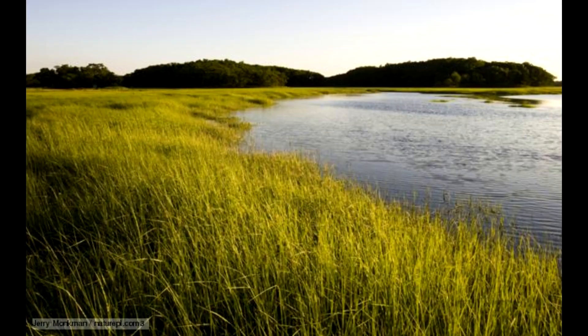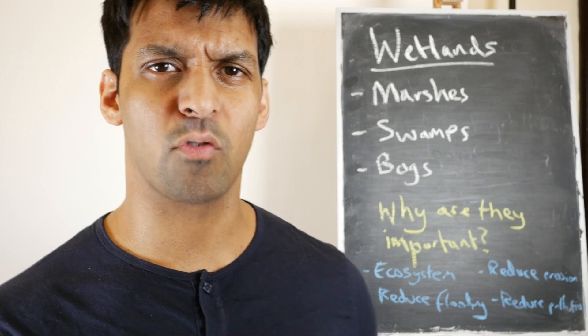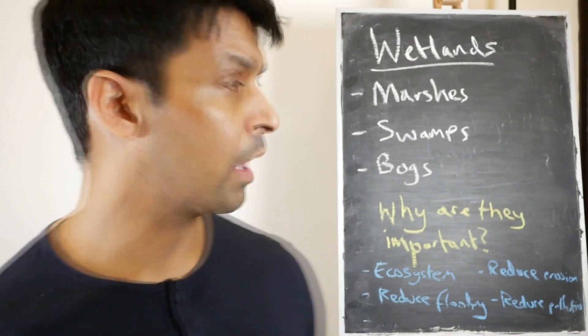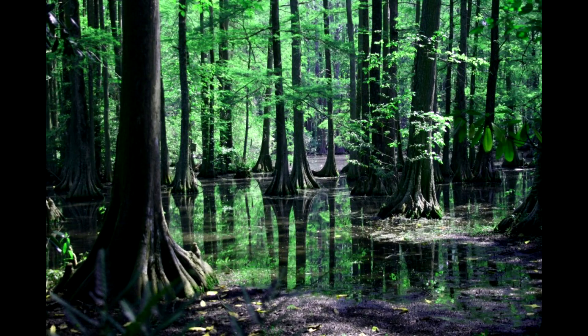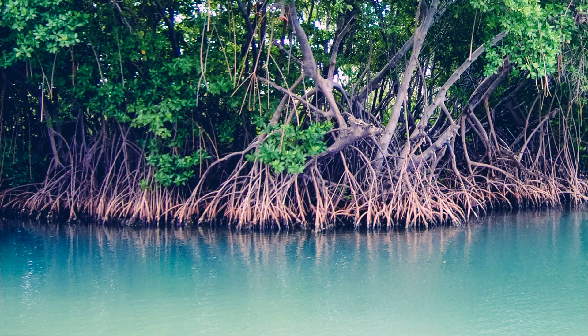Marshes and swamps are both filled with surface water runoff and rain. They're characterized by having very mineral-rich soil, and grasses and reeds. The difference between a swamp and a marsh is that swamps have a lot more woody plants and trees — so you get mangroves in swamps.